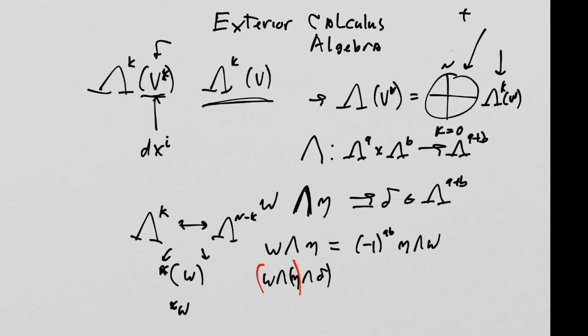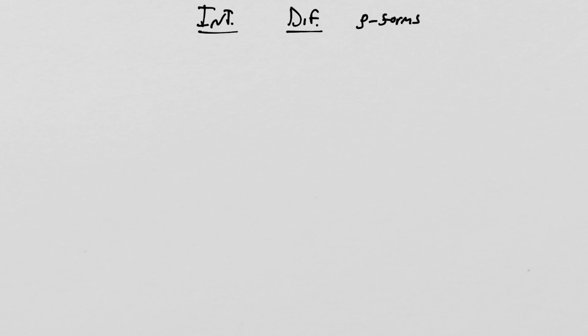Now we want to talk about the exterior calculus. We'll introduce it formally and slowly develop intuition. There's no hope starting from the intuition and developing the formalism — it's best to go the other way. The exterior calculus is basically about integration and differentiation in the context of our p-forms. We already have the Lie derivative and the covariant derivative, and now we introduce a third type: the exterior derivative.